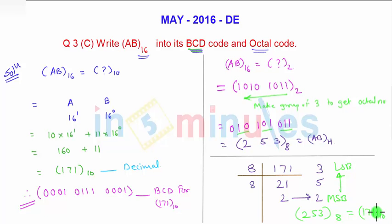So this is how you can solve the problem easily. That's all about the BCD code and octal code of the respective AB hexadecimal number system. For more videos and ideas stay tuned to in 5 minutes and thank you for watching.